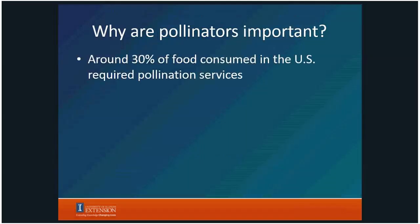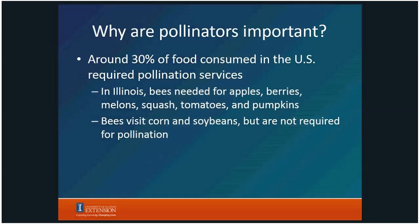Basically every third bite of food you take required pollination services to have ever been grown and delivered to you. In Illinois we have thousands of acres of crops that do require pollination — especially apples, pumpkins, some berries, melons, squash, and tomatoes. You might be interested to find out that honeybees don't do tomato pollination very well, but some native buzz pollinators do them pretty well.